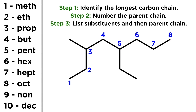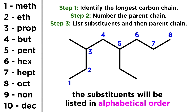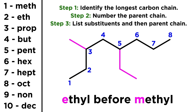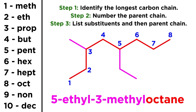Now we are ready to write the name. With two substituents to list, it is time to learn another rule: we always list the substituents in alphabetical order, regardless of their position on the molecule. Here, that will mean ethyl before methyl, because E comes before M alphabetically. So we get 5-ethyl-3-methyloctane.